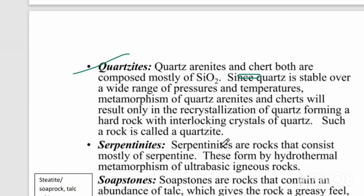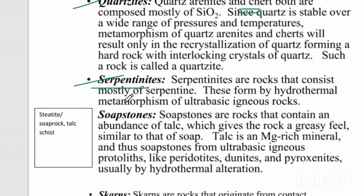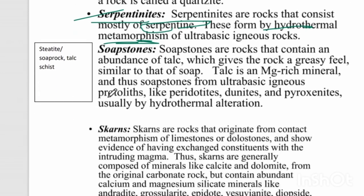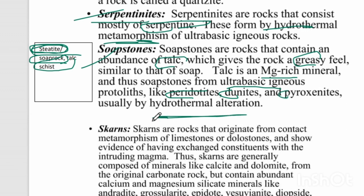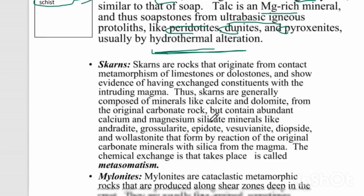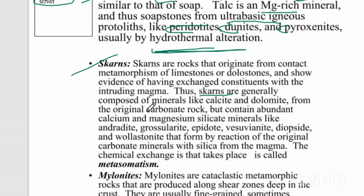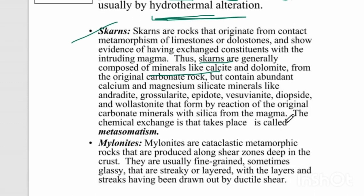Amphibolite, marble, and eclogite are non-foliated. Quartzite is made from quartz-containing rocks like sandstone. Serpentinites consist mostly of serpentine, formed by hydrothermal metamorphism. Soapstone is also called steatite, soap rock, or talc schist. Soapstones contain an abundance of talc, giving the rock a greasy feel; talc is a magnesium-rich mineral. Soapstone forms from ultrabasic igneous protoliths like peridotites, dunites, and pyroxenites, usually by hydrothermal alteration. Pontite is also formed by hydrothermal metamorphism.